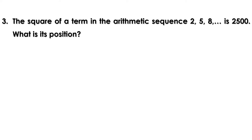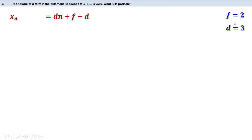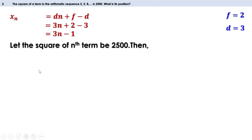Third problem: the square of a term in the arithmetic sequence 2, 5, 8, ... is 2500. What is its position? The first term is 2 and the common difference is 3. The nth term is dn + (f - d) = 3n + (2 - 3) = 3n - 1. We are told the square of the nth term equals 2500, so (3n - 1)² = 2500.